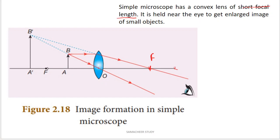We place the object at the optical center. Here is the image. We know the ray diagram. The ray diagram shows the optical center. This ray is parallel to the principal axis. If you look at this diagram, the image is on the same side as the object — it is an enlarged image. This is the simple microscope.